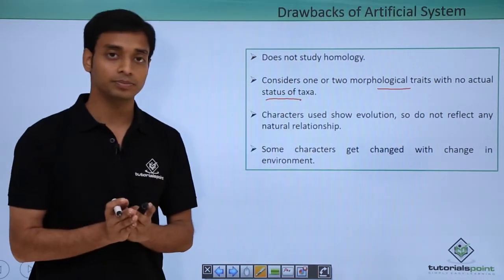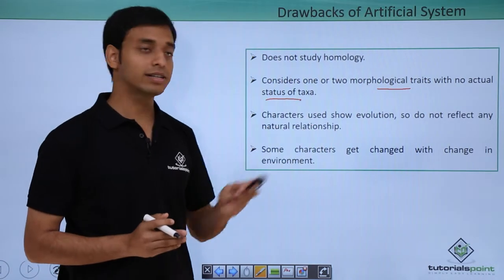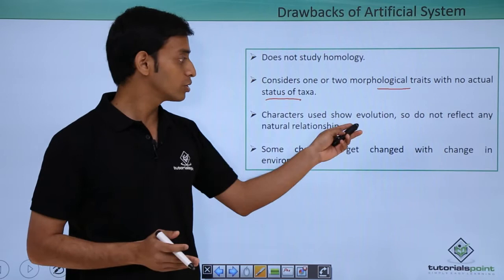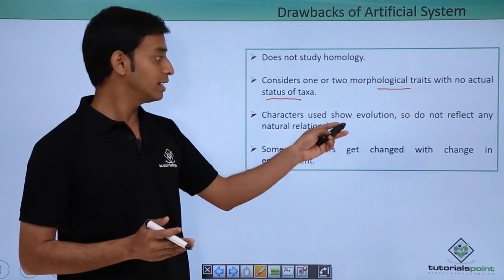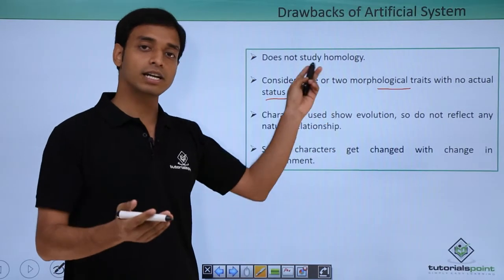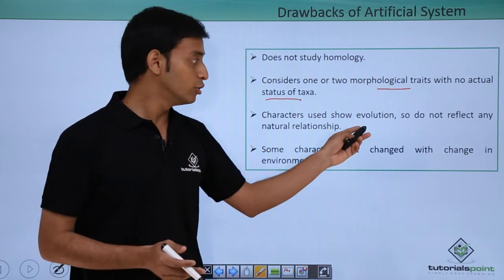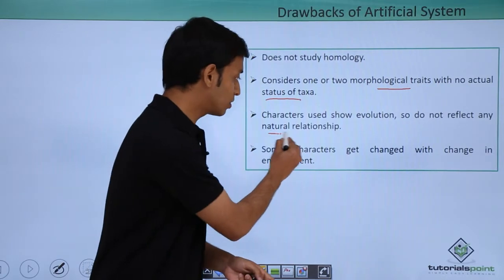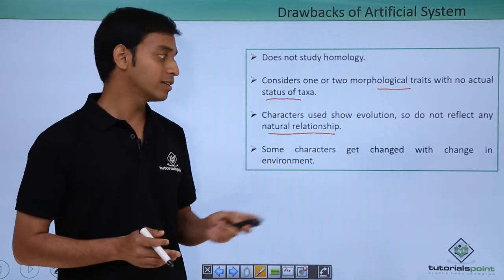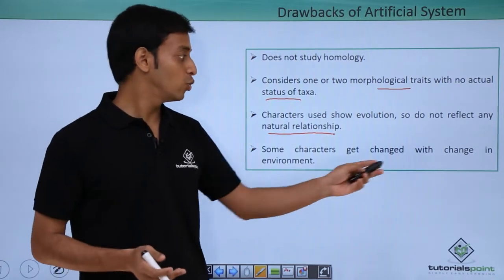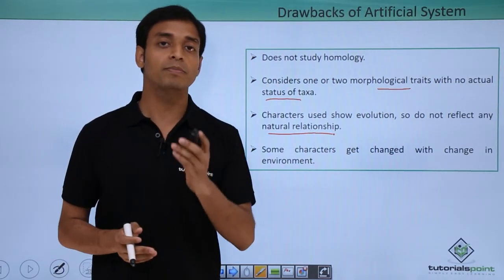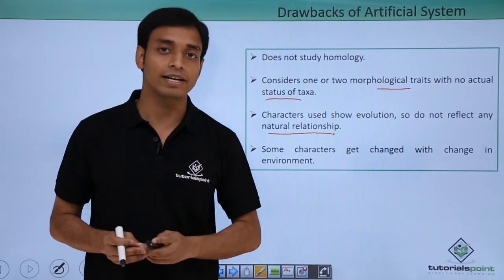The characters used by the artificial system of classification do not show homology, and since the characters considered do not reflect evolutionary relationships, the artificial system does not reflect any natural relationship. Also, some characteristics get changed with the change in environment — a good example is the property of being biennial or annual habitat in the case of radish.